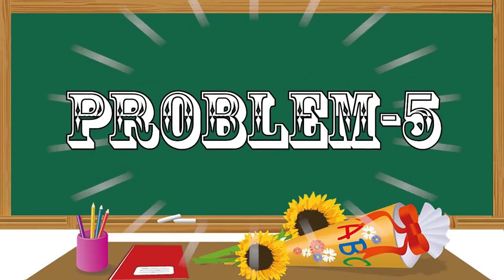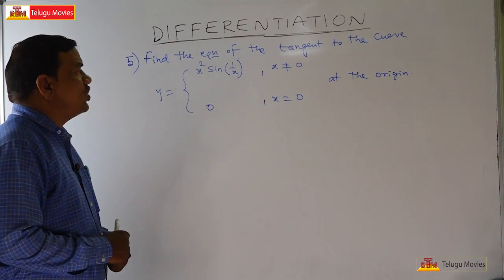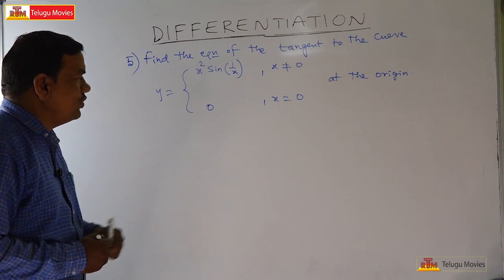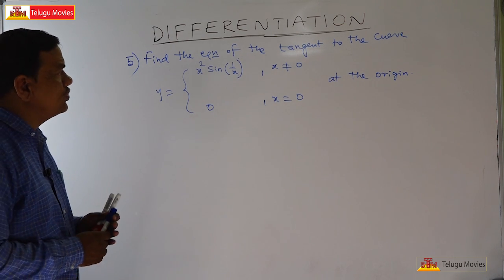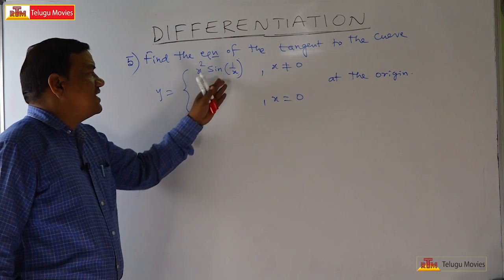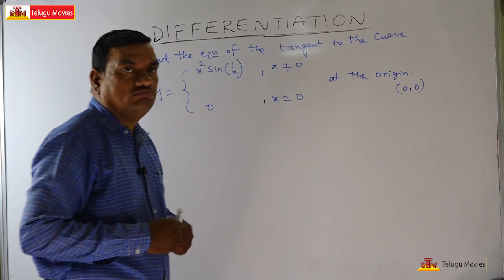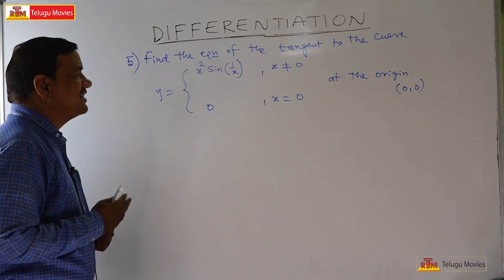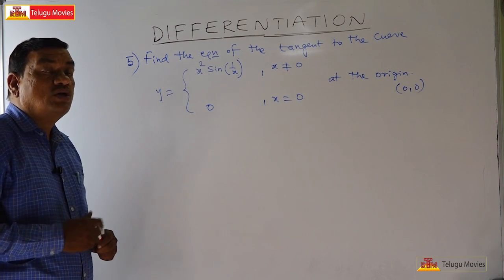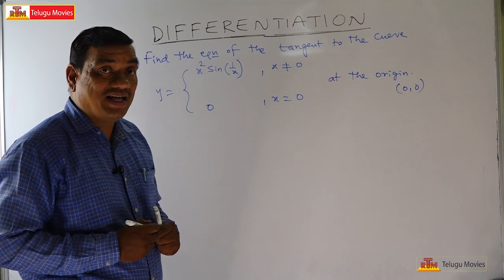Welcome to this problem: find the equation of the tangent to the curve y = x²sin(1/x) for x ≠ 0, and y = 0 at x = 0, at the origin. This is a piecewise function. Before finding the slope, we must check whether the function is continuous at (0, 0).